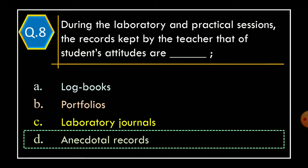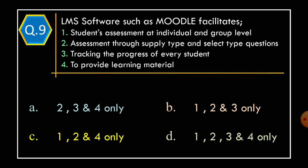Question 9: LMS software such as Moodle facilitates — Statement 1: student assessment at individual and group level; Statement 2: assessment through supply type and select type questions; Statement 3: tracking the progress of every student; Statement 4: provision of learning material. Options: Option A: Statements 2, 3, and 4 only; Option B: Statements 1, 2, and 3 only; Option C: Statements 1, 2, and 4 only; Option D: Statements 1, 2, 3, and 4 only.